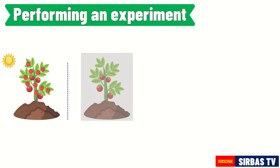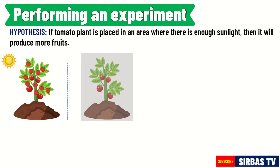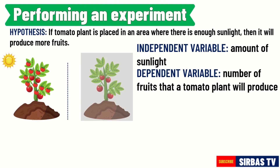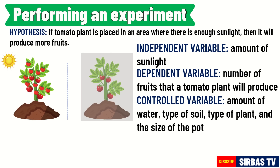For our example, we want to test our hypothesis: if a tomato plant is placed in an area where there is enough sunlight, then it will produce more fruits. We will design an experiment testing the effects of sunlight on the number of fruits a tomato plant will produce. The independent variable will be the amount of sunlight. The dependent variable is the number of fruits the tomato plant produces. The controlled variables are the amount of water, type of soil, type of land, and the size of the pot.